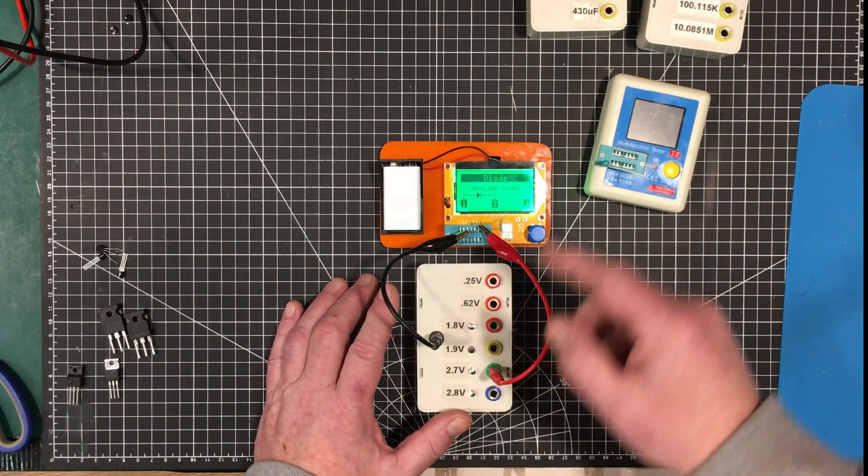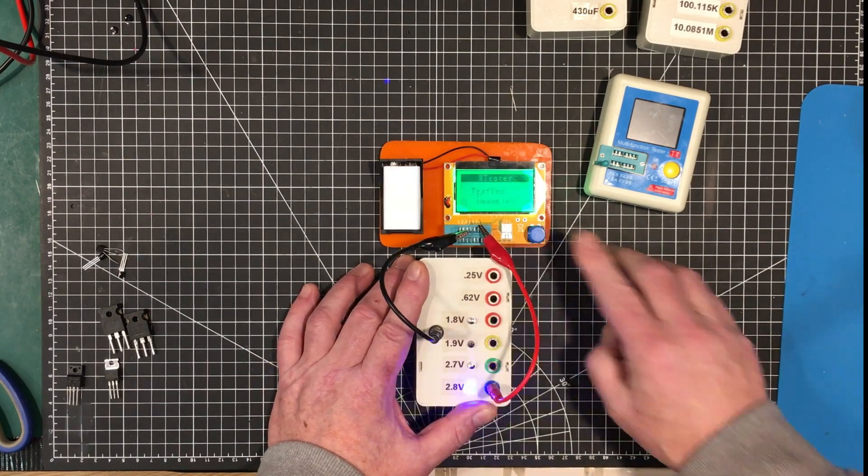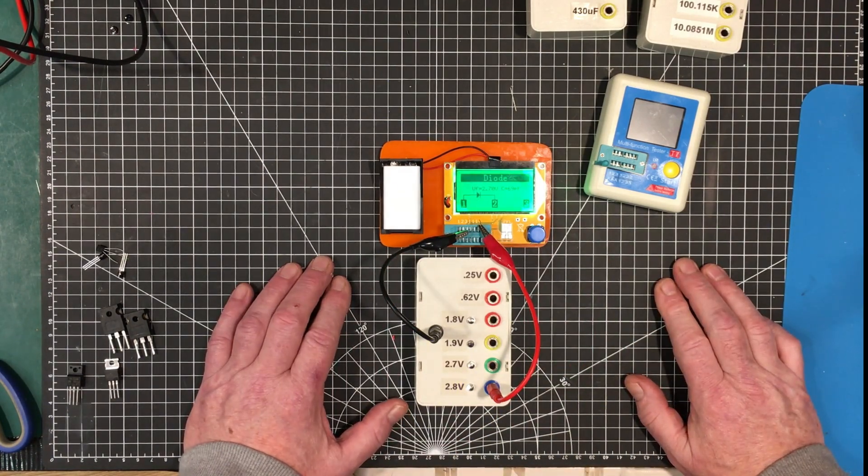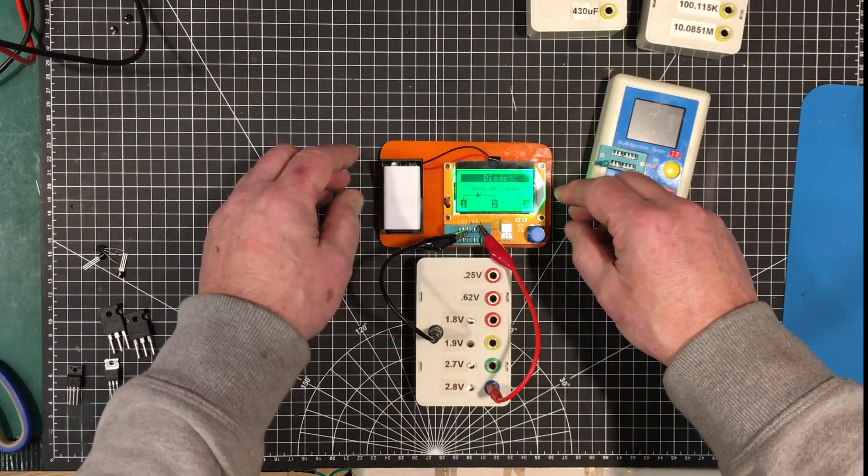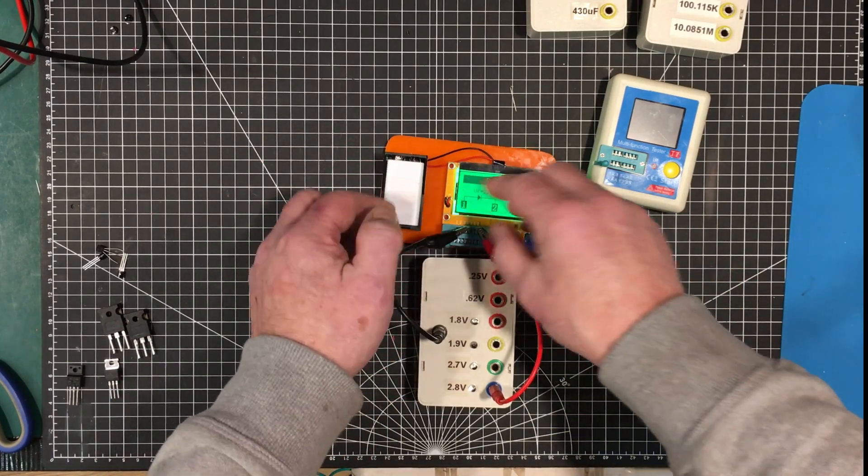It's actually working pretty good, pretty close. 2.7 versus 2.6. Again, it's current dependent. Not bad.